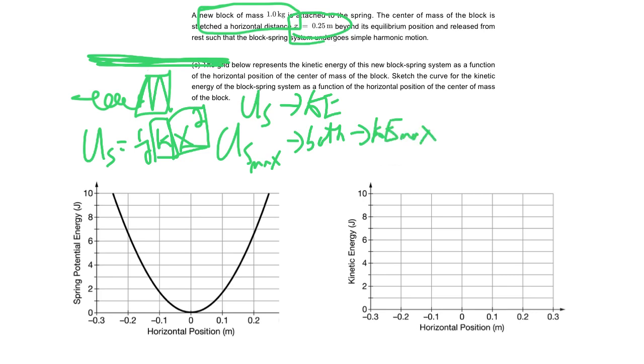So I guess the point is, is if we start with 10 joules of US, we should end up with 10 joules of KE when we're at that maximum point. Well, where does that maximum point occur? That occurs right in the middle.